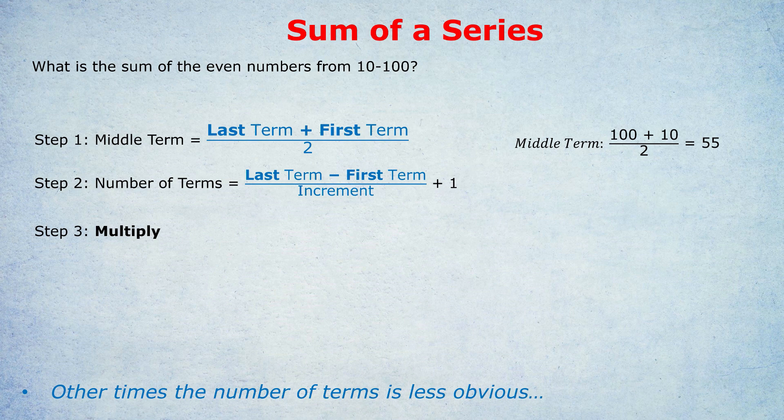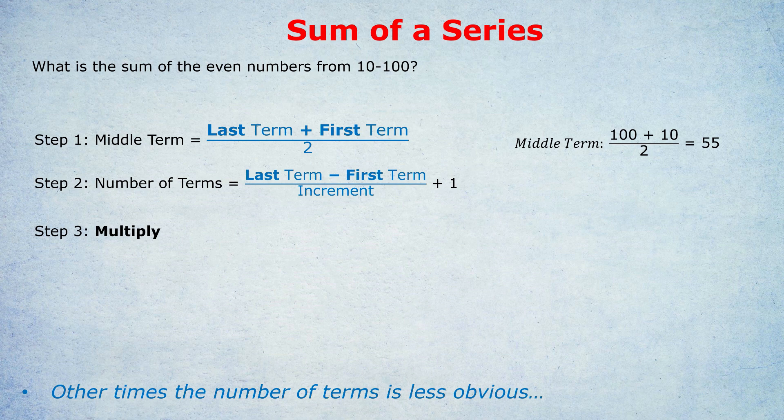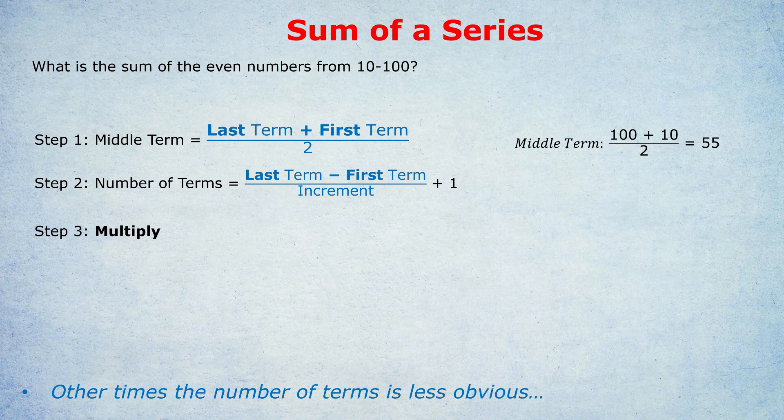So we're going to pretend that every single even number from 10 to 100 is actually just the number 55. So how many 55s do we have? How many number of terms do we have? Well, we do last term minus first term divided by increment plus 1. Last term is 100. First term is 10. 100 minus 10 is 90 divided by the increment. And the increment is 2 here, because we're going up by 2 each time. We're dealing with every even number, not every single number.